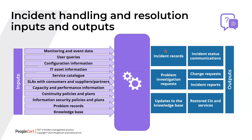The outputs of the process include: incident records, problem investigation requests for certain incidents, updates to the knowledge base for every incident, incident status communications for every incident, change requests for specific incidents, incident reports particularly for major incidents and for new types or recurring incidents, and restored CIs and services for every incident. In between, we have the various activities of incident management.